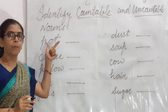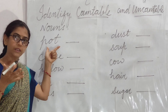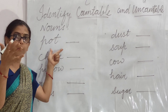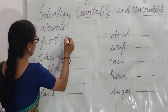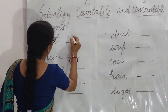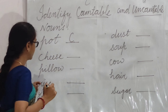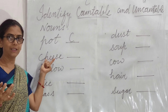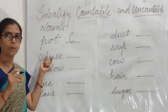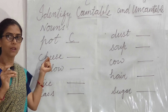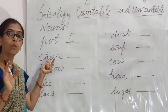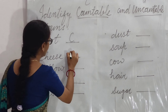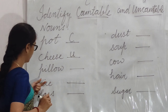Pot — pot ko hum gin sakti hain? Yes. Pot ka plural hota hai pots — matke jise kehte hain Hindi mein. So we will write C. Cheese — aap sab khaate hain, sab ko achha lagta hai. Cheese ko aap count kar sakti hain? No — cheese ko hum count nahi kar sakti. So write U.